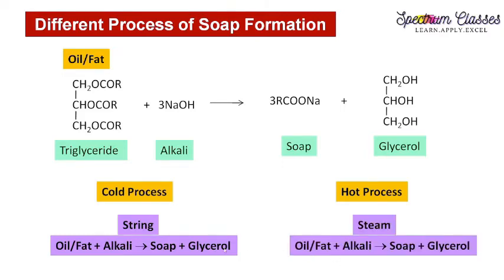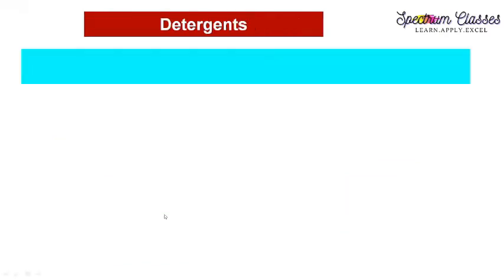In the hot process, the same scheme is used but the oil and alkali solution is heated with steam. The advantage of the hot process is that valuable glycerol can be recovered by suitable processes. However, in the cold process separating out the glycerol is not easy. A drawback of the hot process is that soft soaps cannot be formed because they are soluble on heating.